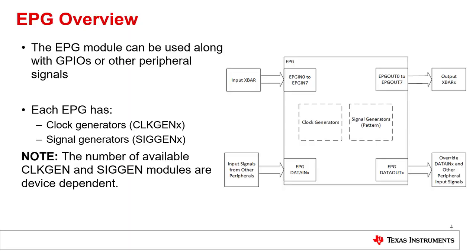Inputs to the EPG can be sourced from both GPIOs or other internal signals of the C2000 device. The outputs of the EPG can be used to drive GPIOs or override existing internal signals in the C2000 device. This allows the EPG to be used as both an independent module or as an additional customizable signal generator for an existing module in the MCU.